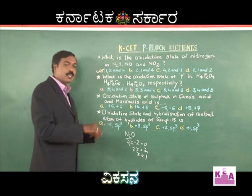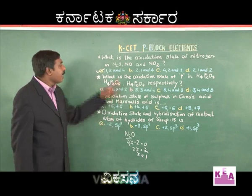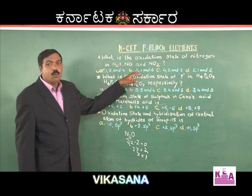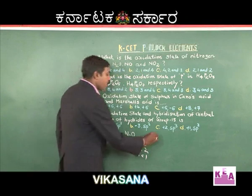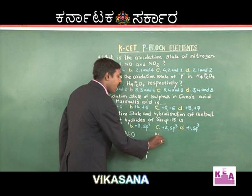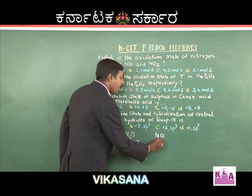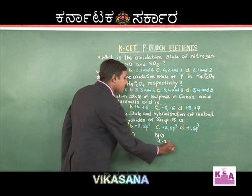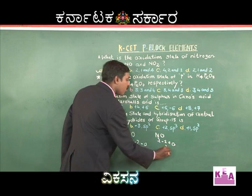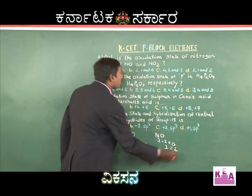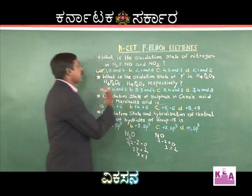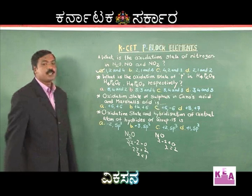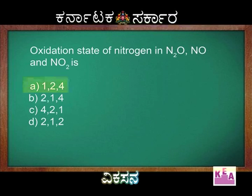Let me complete the question. For NO (nitric oxide): x + (−2) = 0, so x = +2. This matches and works to the expected standards. I hope you have understood this numerical.